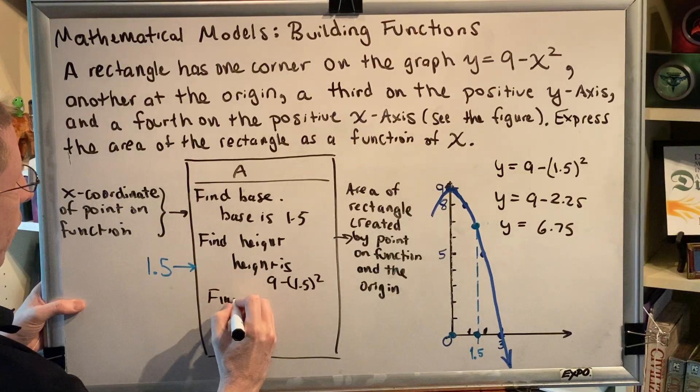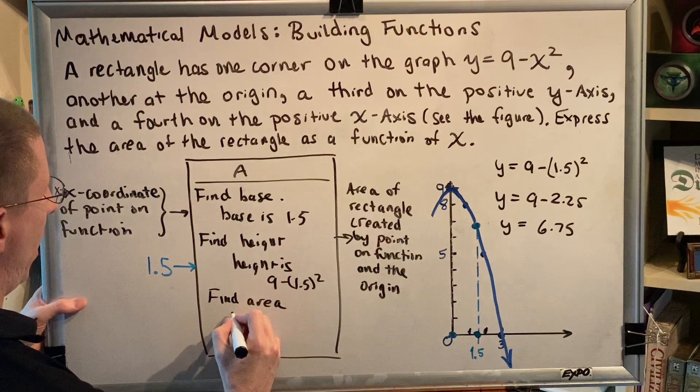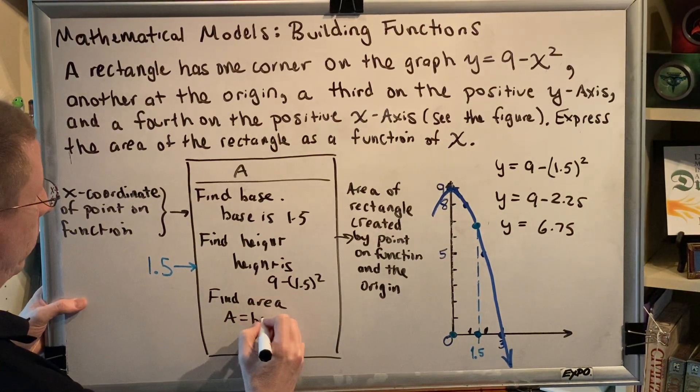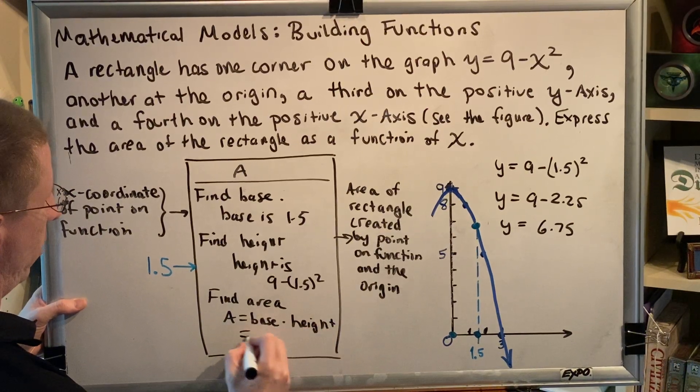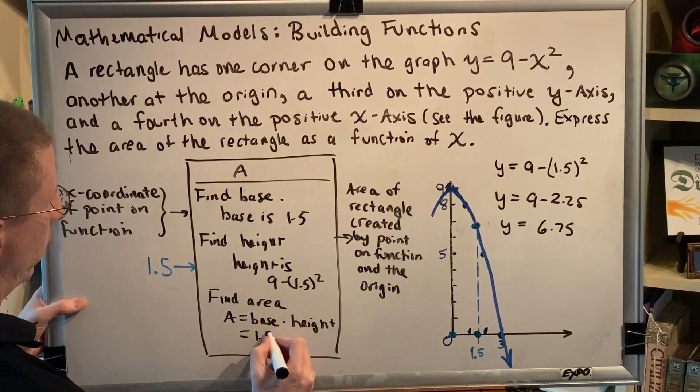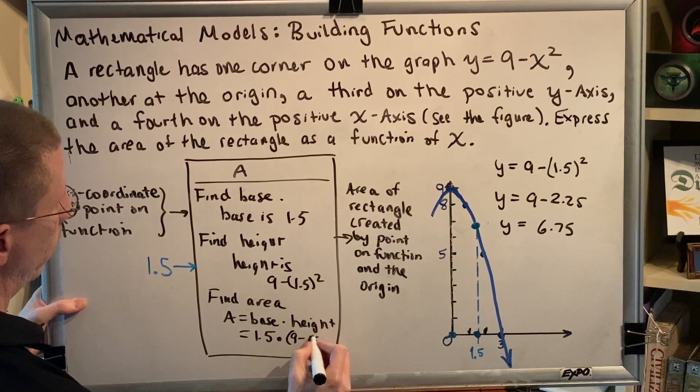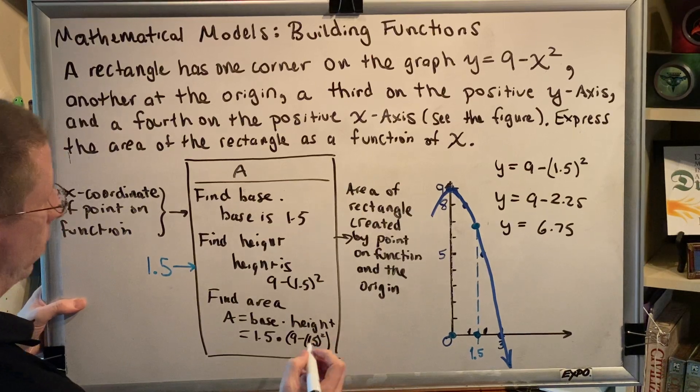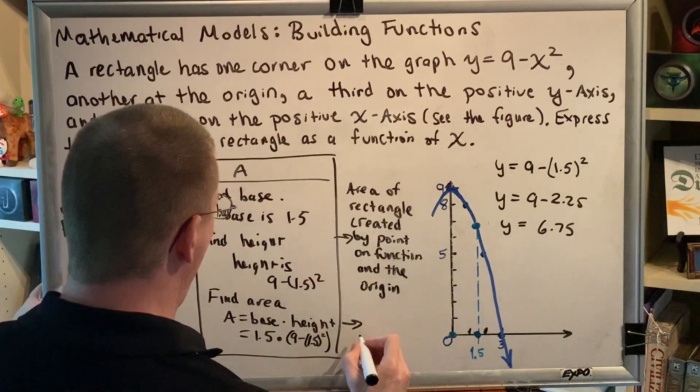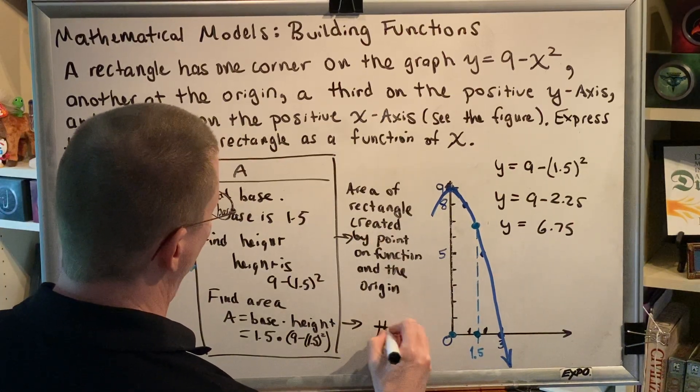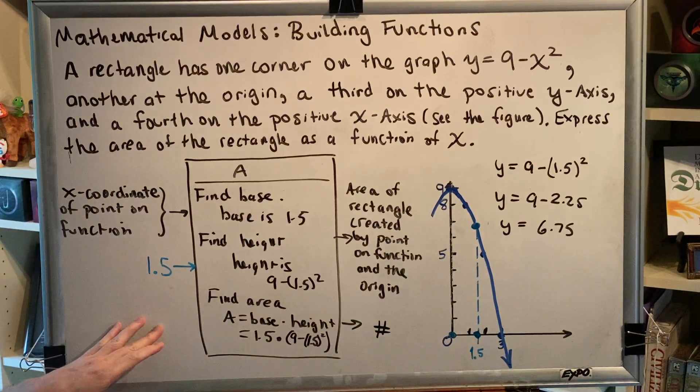The height is 9 - 1.5². Now we need to find the area. The area is base times height, which is 1.5 times (9 - 1.5²). That value will come out as a number representing the area.